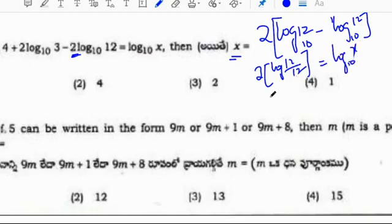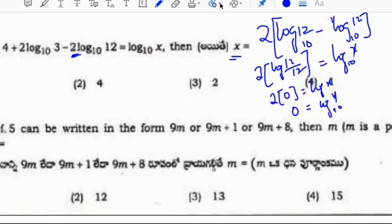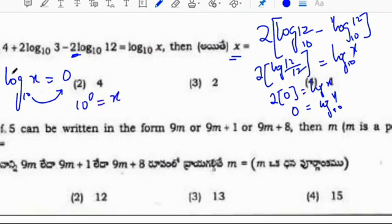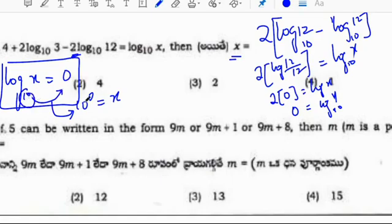So log(12/12) is log 1 and log 1 value is 0. Therefore 2 times 0 equals log x. So 0 equals log x base 10. Converting to exponential form: 10 to the power 0 equals x. Since 10^0 equals 1, x equals 1. The value of x is 1, which is option 4.